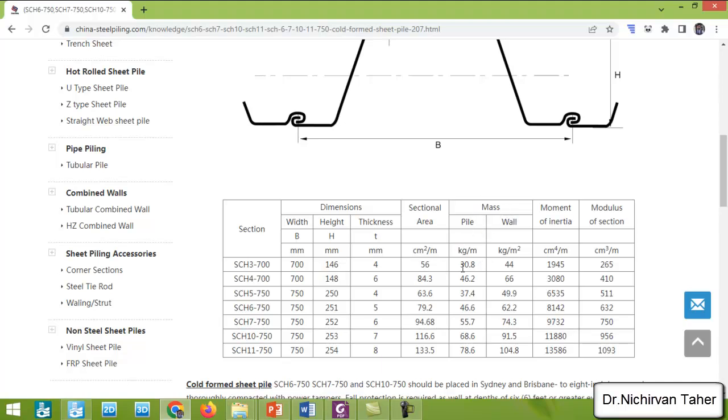Per meter of the pile or per meter square. Also the moment of inertia and section modulus of the sheet pile wall per meter. So these parameters are important and we can easily find in any catalog of sheet pile wall.